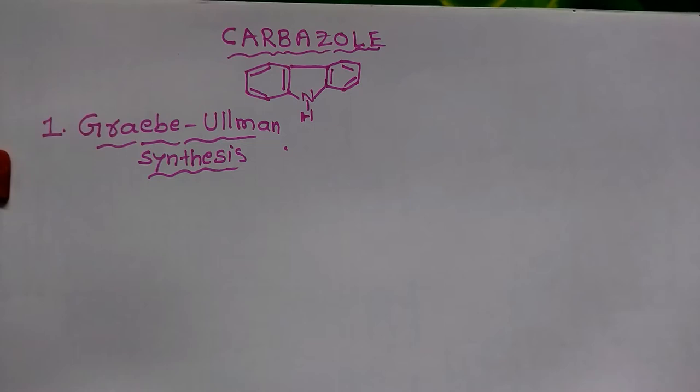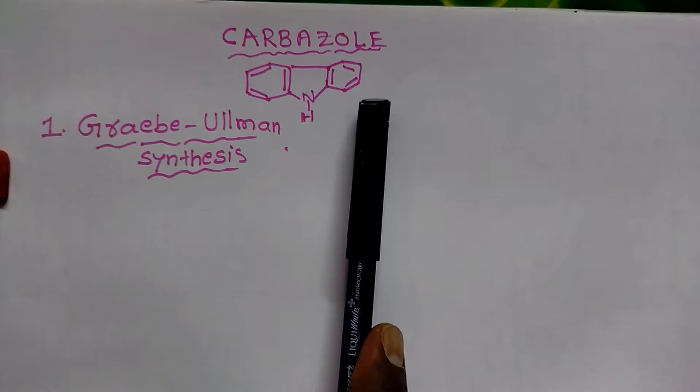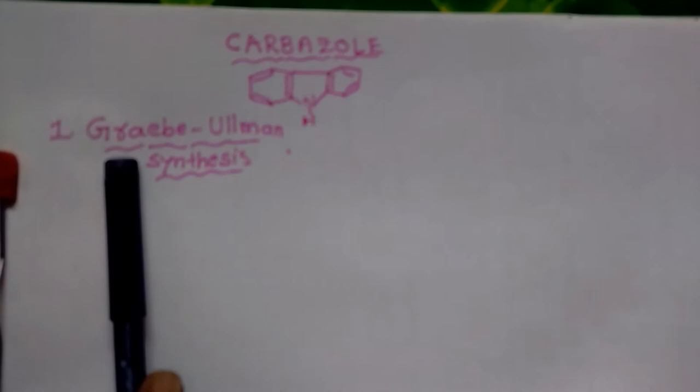In this video we are going to learn about the preparation and properties of carbazole. In carbazole we have three rings: one is the pyrrole ring and the other two are benzene rings. The pyrrole is flanked by the two benzene rings, and such a compound is known as carbazole.